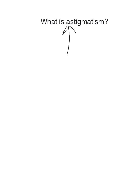This video is about what is astigmatism. The 'a' in astigmatism means 'without' in Latin. 'Stigma' in Latin means 'point.' So astigmatism means without a point.